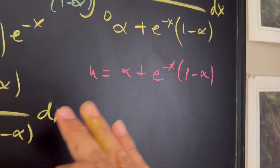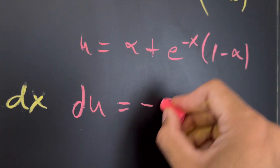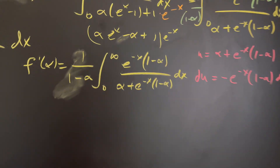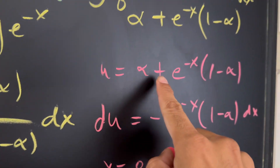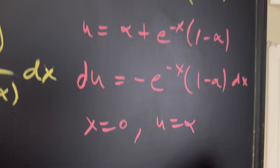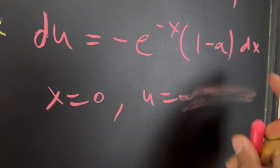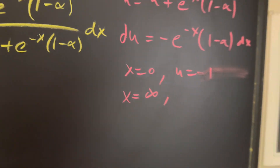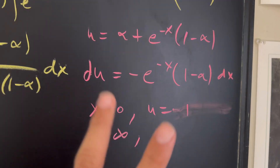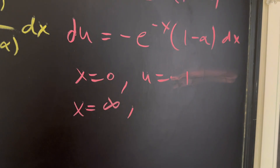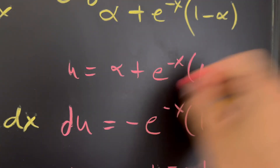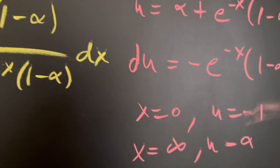We can now do a U-substitution: let u = α + e^(−x)(1 − α), so du = −e^(−x)(1 − α) dx. Changing the parameters: when x = 0, u = α + 1·(1 − α) = 1. When x → ∞, e^(−x) → 0, so u = α. This gives us a clean new integral with limits from 1 to α.